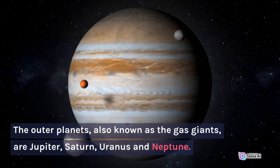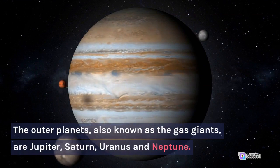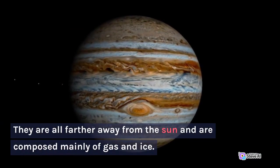The outer planets, also known as the gas giants, are Jupiter, Saturn, Uranus and Neptune. They are all farther away from the sun and are composed mainly of gas and ice.